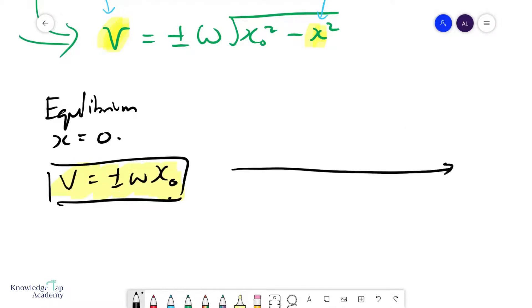And also if we plot the graph for this, we'll get something quite pretty. v versus x, this will be an ellipse that looks something like this. Of course, over here we have ωx₀, we have minus ωx₀, and this is the amplitude, this is the negative amplitude. Very nice.